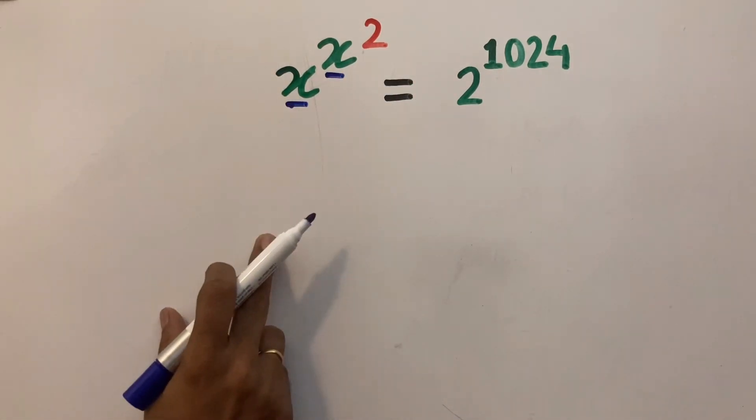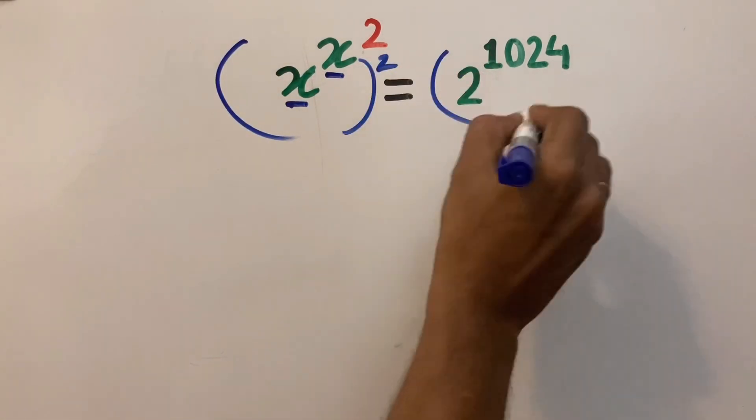Therefore, to make it symmetrical, we are going to square both sides of the equation.